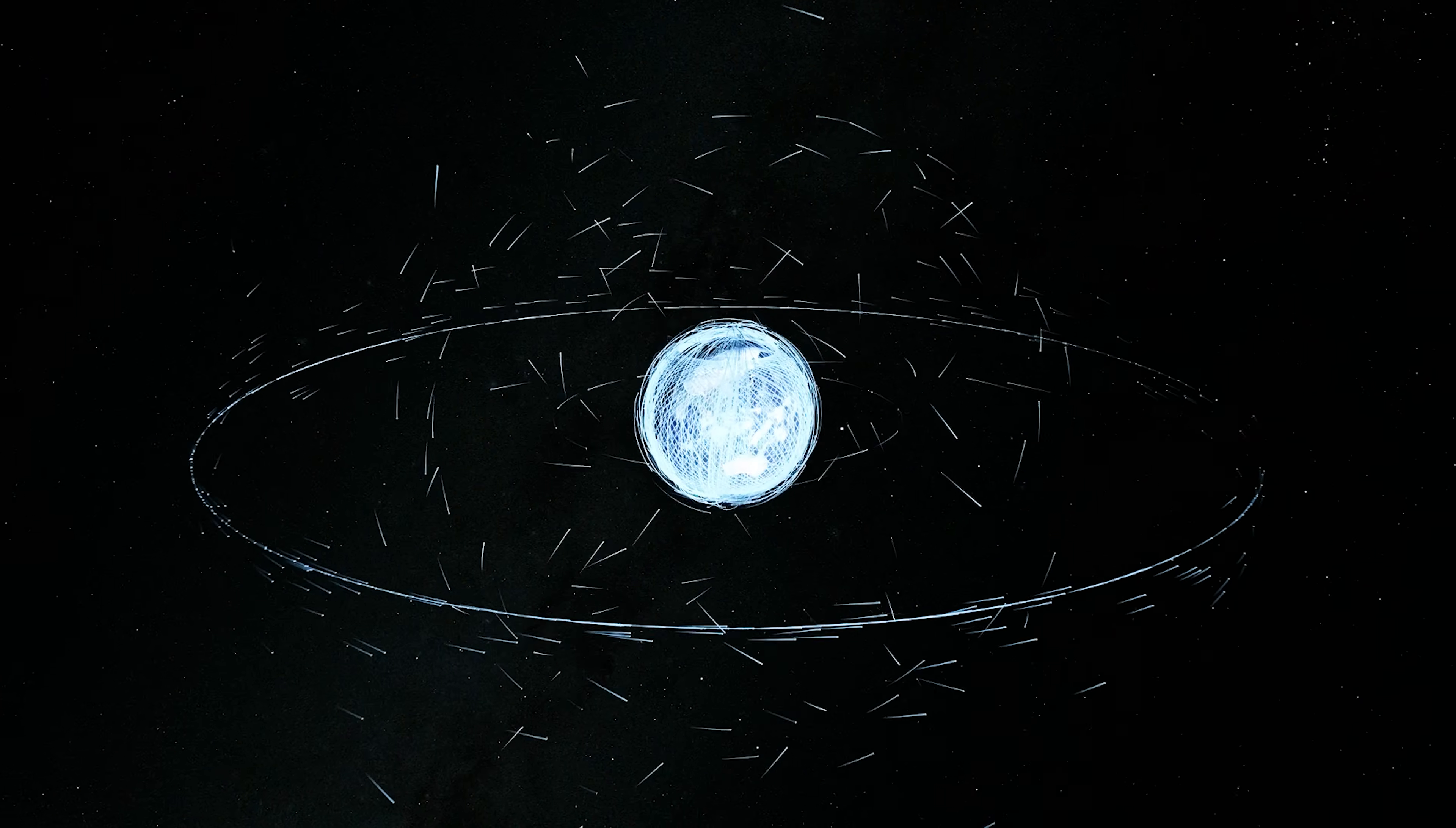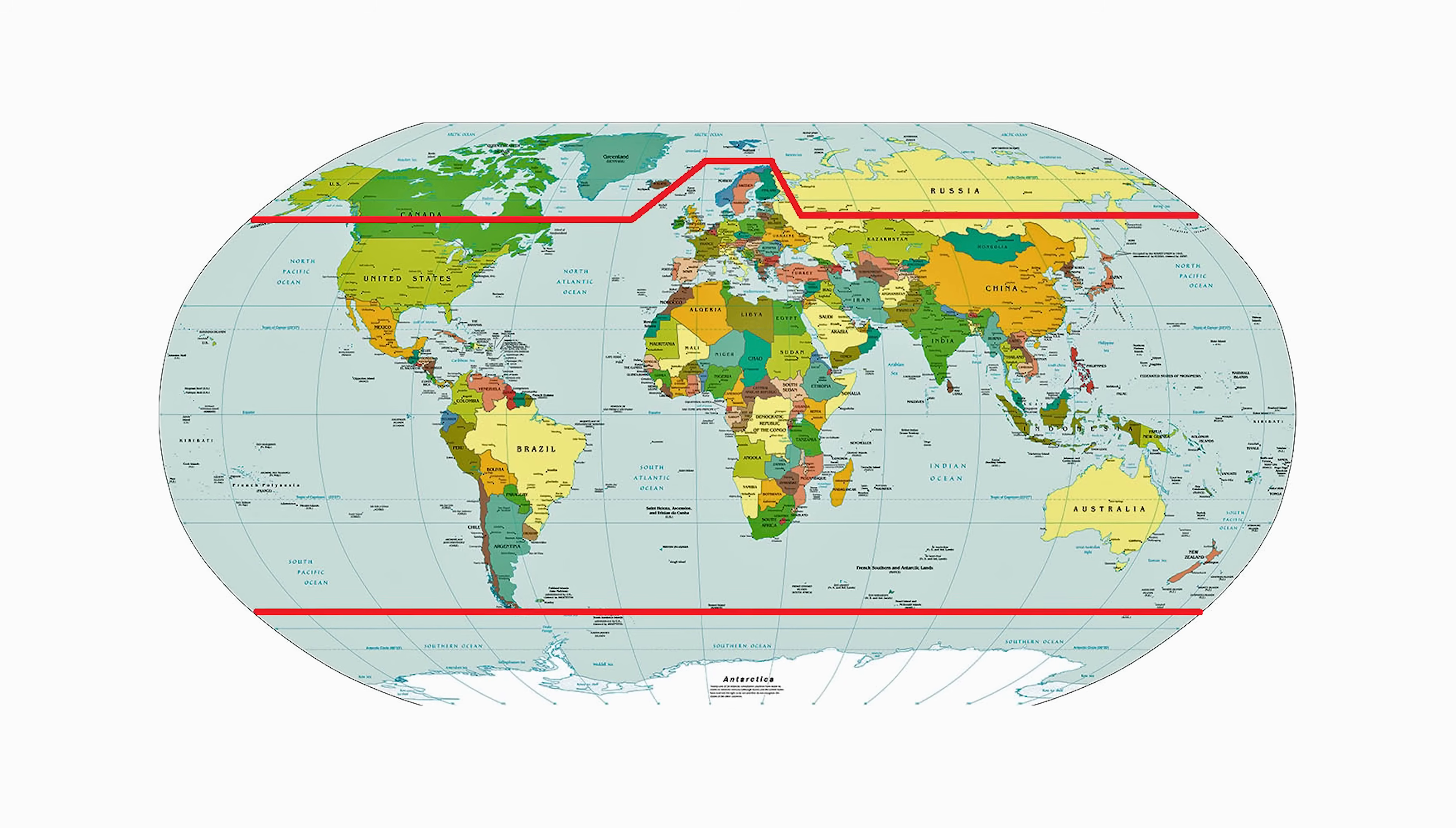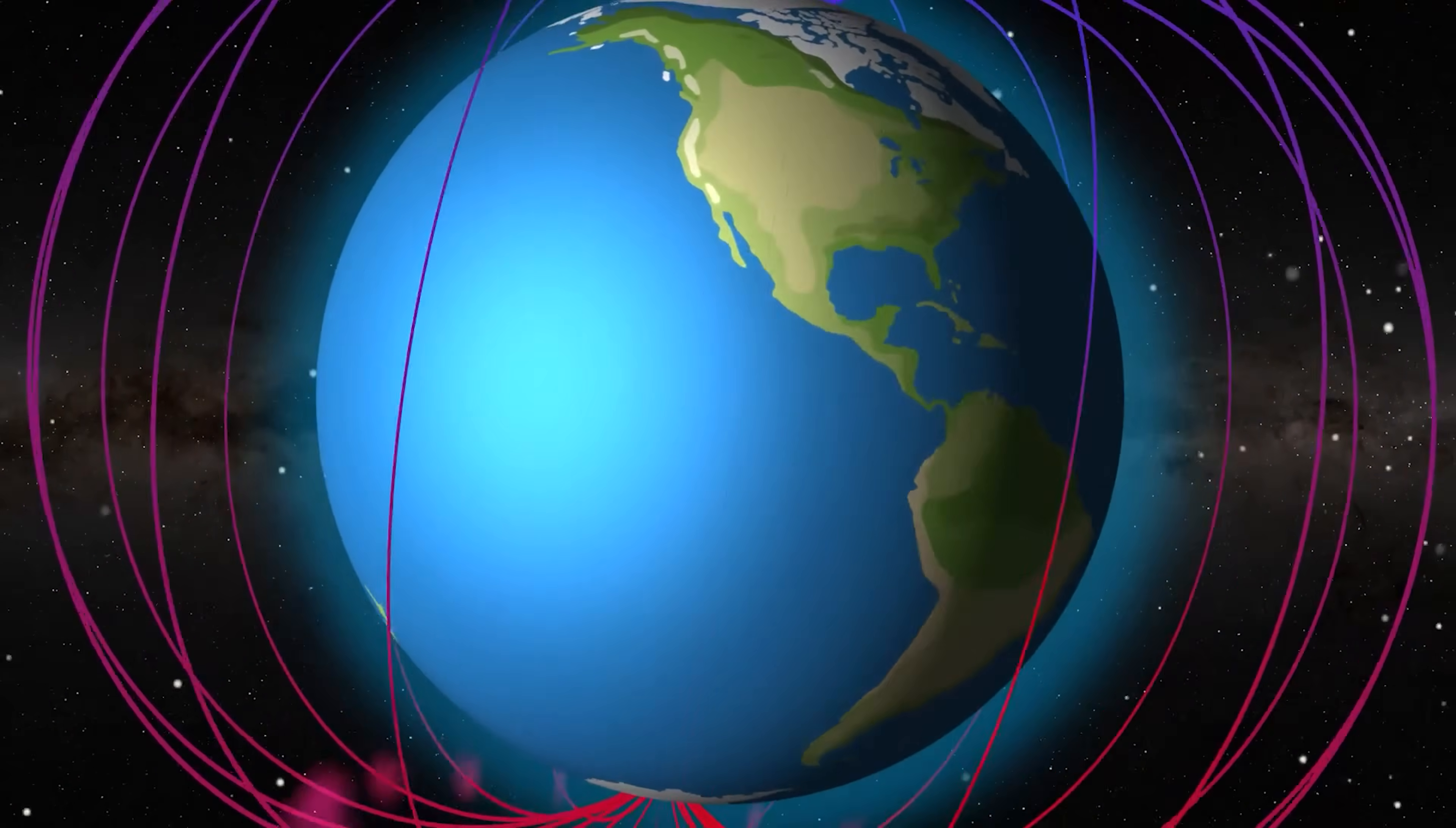G2s are a moderate storm, happening about 600 times every cycle. Auroras can be seen as far down as 55 degrees latitude. Birds and other migratory animals that rely on the Earth's magnetic field can get lost. High altitude power systems can experience voltage alarms, and some satellites may need to be reoriented.